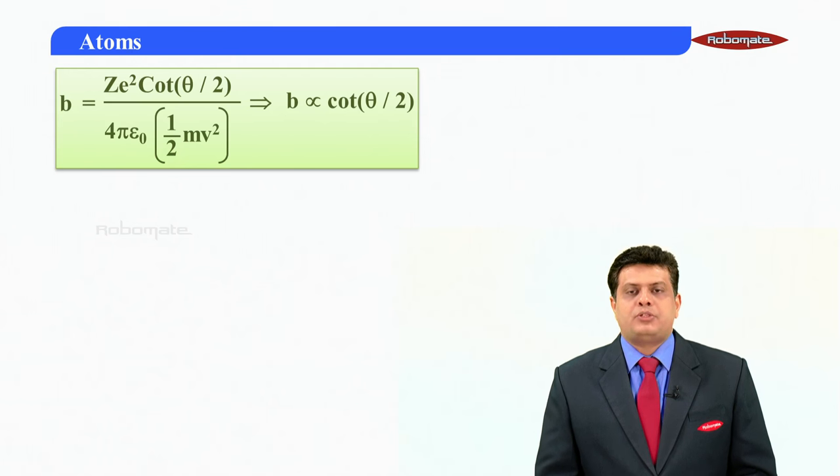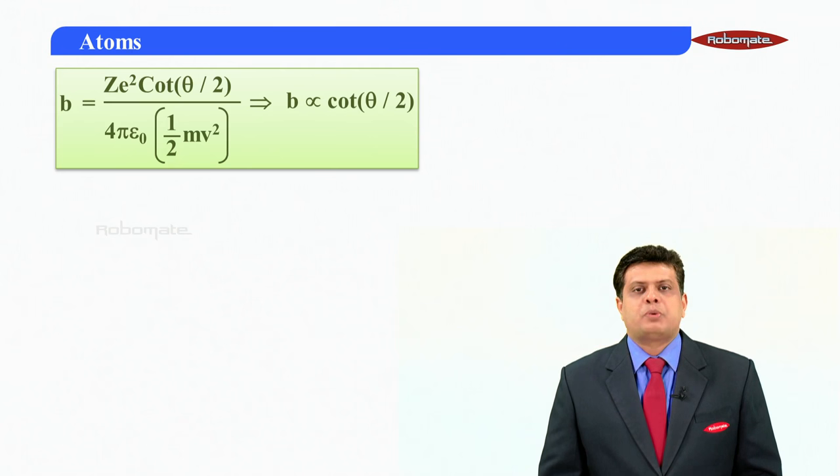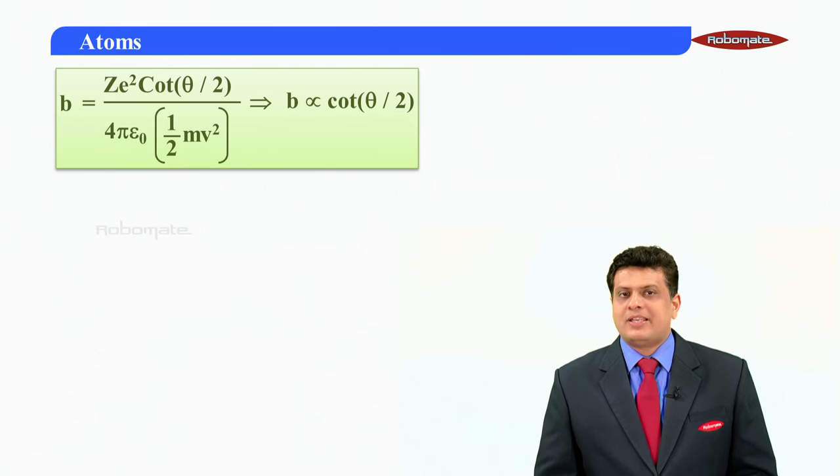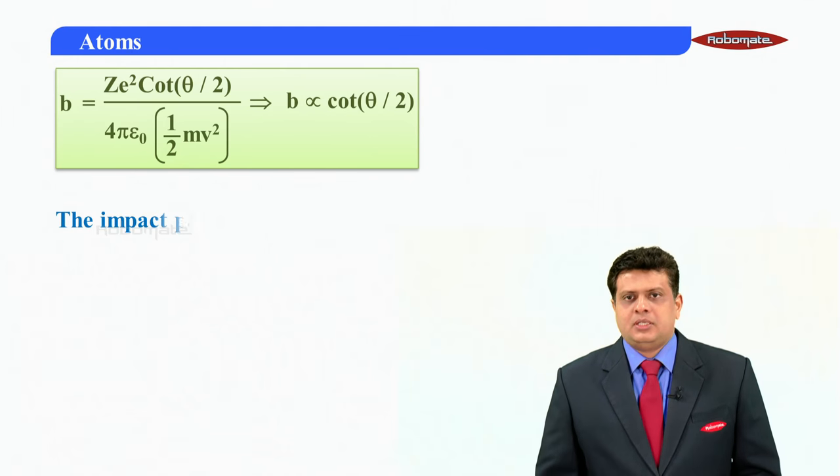Z-e-square cot theta by 2, 4 pi epsilon-not, half mv-square. And that simply indicates that B is proportional to cot theta by 2, where theta is a scattering angle.